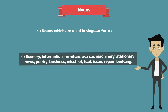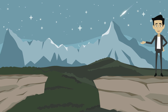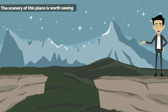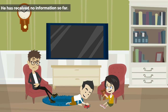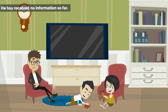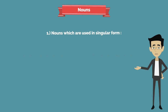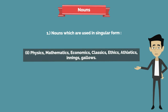Examples: 'The scenery of this place is worth seeing.' 'He has received no information so far.' Second group of singular-form nouns: physics, mathematics, economics, classics, ethics, athletics, innings, gallows.